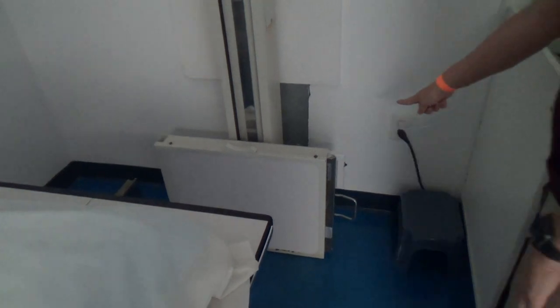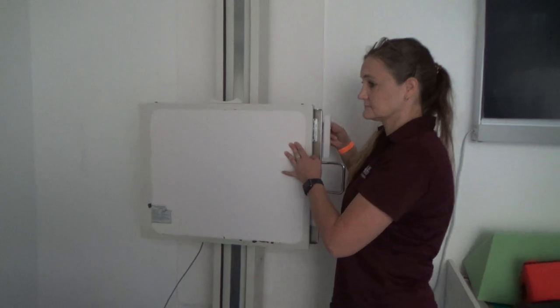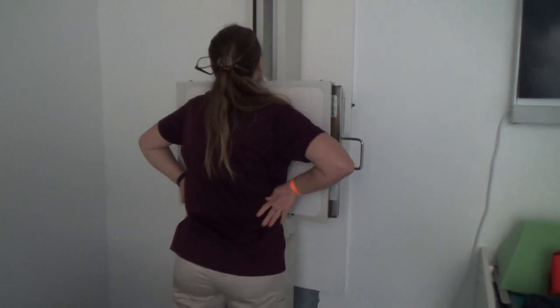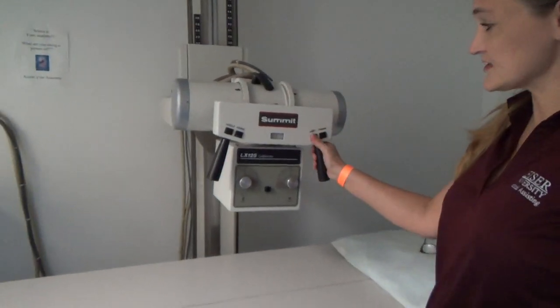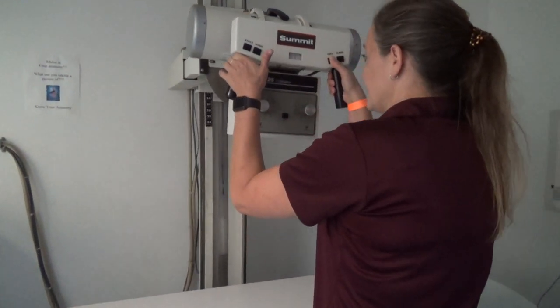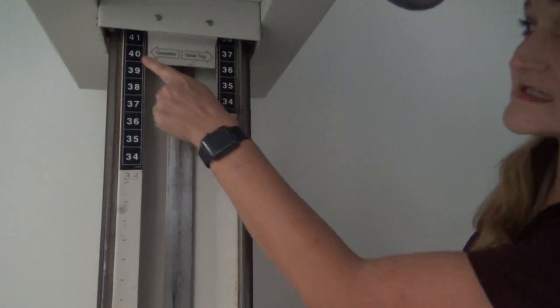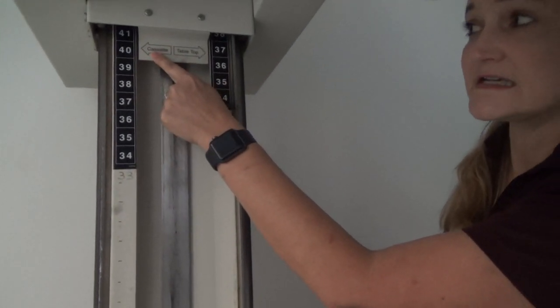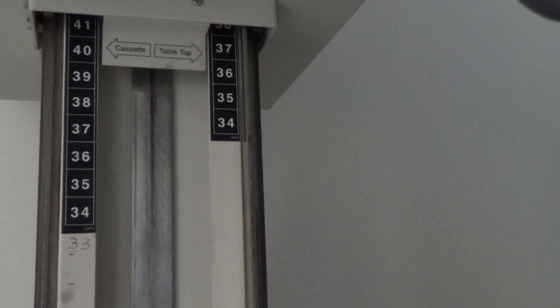You also have an upright bucky over here. There's a little button on the side — same thing, it just slides up so that if you have to get your patient in an upright position, you can do that. For the vertical lock, if you push this button in, this allows you to move your tube up and down. The vertical button is important because this is how you set your distance. For general radiography, we use 40 inches as our distance, using the built-in image detector in the table.